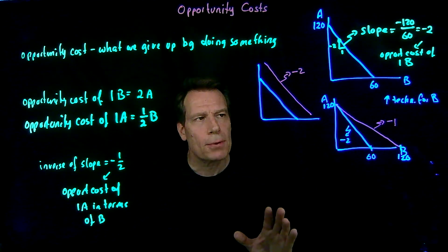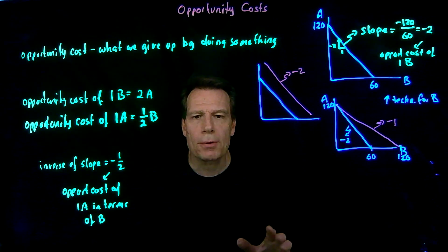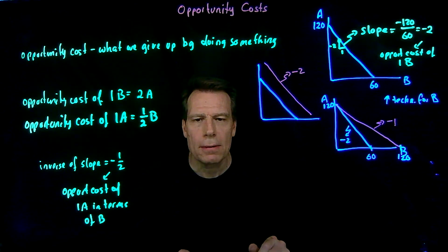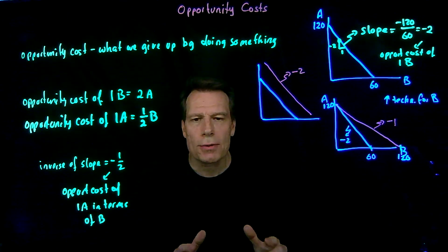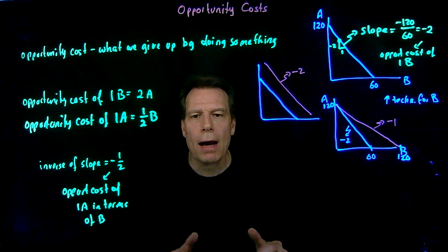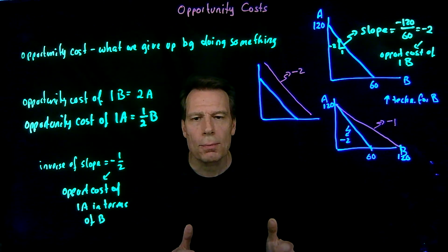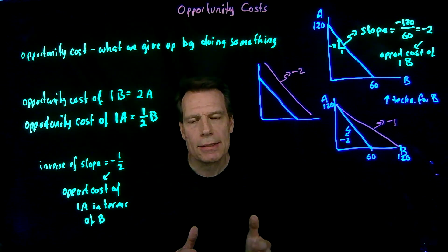So production possibilities curves don't just illustrate the productive capacity of an economy — they also illustrate the opportunity costs we face as we choose to produce more of one thing and less of another.